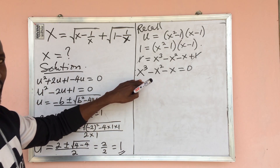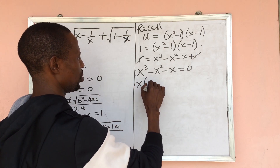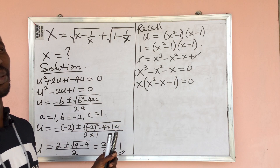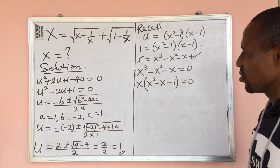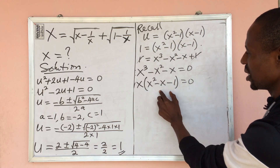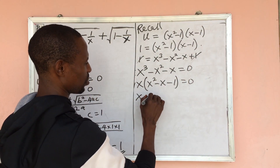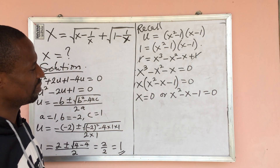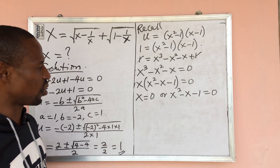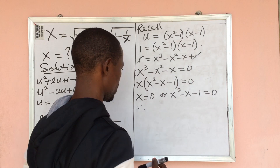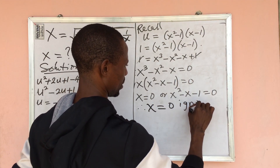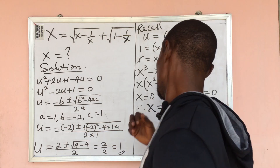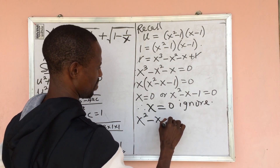We can factor out x: x times (x squared minus x minus 1) equals zero. By the zero product rule, x equals 0 or x squared minus x minus 1 equals 0. However, x equals 0 must be rejected because plugging it into our original equation does not give a valid result. So we discard x equals 0.